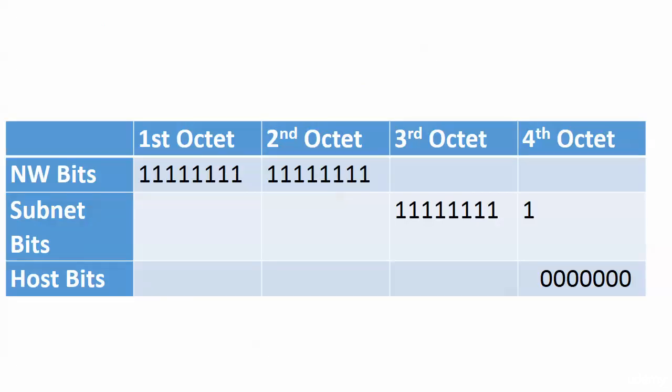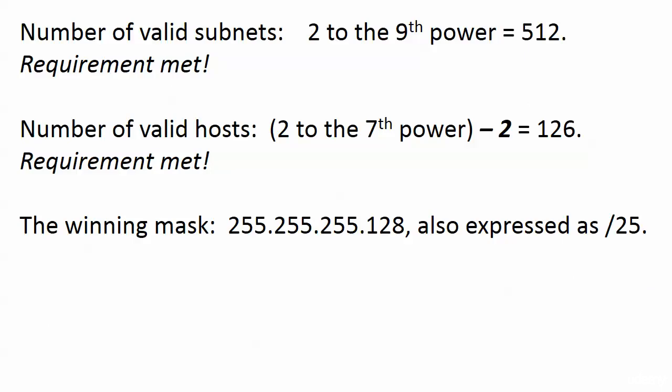What we do in this situation is borrow one more subnet bit, giving us 9 subnet bits. The number of valid subnets is 2 to the 9th power — 512 — requirement met, we have at least 200. Then the number of valid hosts: 2 to the 7th power minus 2 equals 126 — requirement met, it falls between 120 and 150. So the only mask that does the job can be expressed two ways: 255.255.255.128 or slash 25.